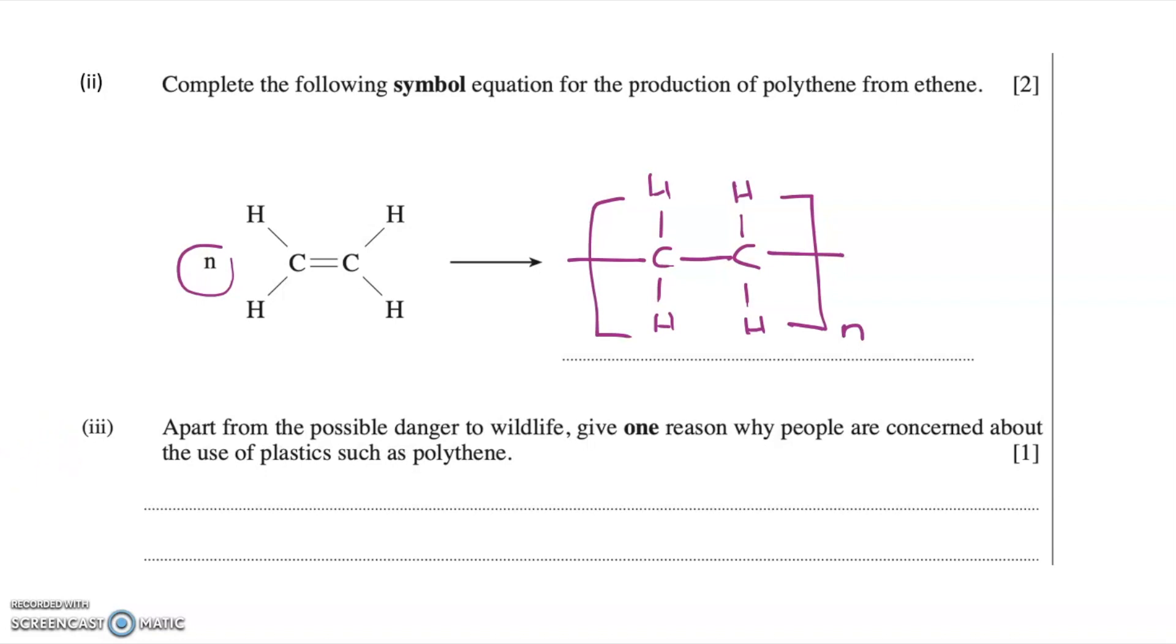So the bonds come outside the brackets to show they can join to other C2H4 structures. Now in this equation, they've said N ethene molecules react, so N represents a large number. So because it's N ethene molecules, I put an N after the brackets to show that the repeating unit, the C2H4, repeats N times. So they give you one mark for the correct repeating unit here, C2H4, with a single bond. And if you put it in brackets and put N, they get you the second mark.